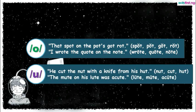For the short U sound: He cut the knot with a knife from his hut — knot, cut, and hut all have the short vowel sound. For the long U sound: The mute on his lute was acute — lute, mute, and acute all possess the long U sound.